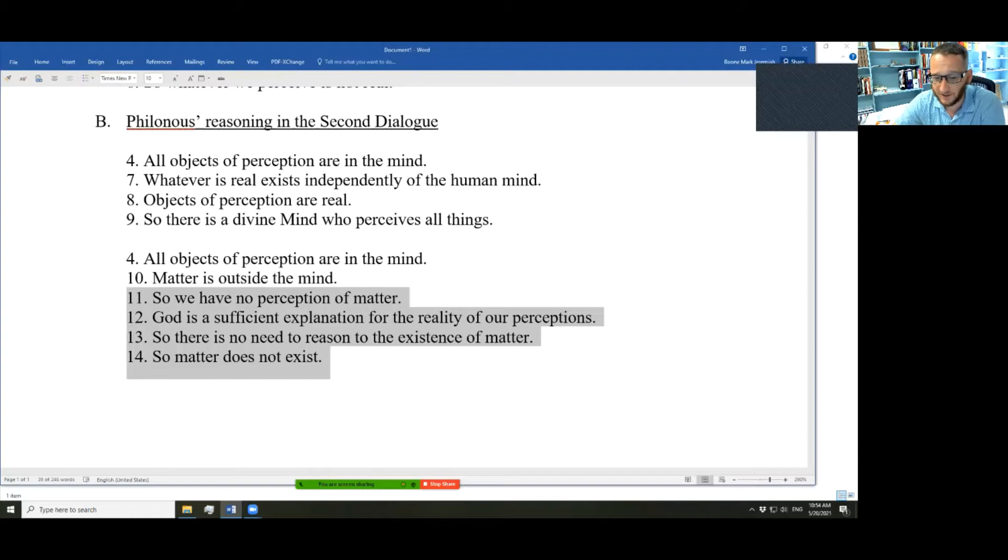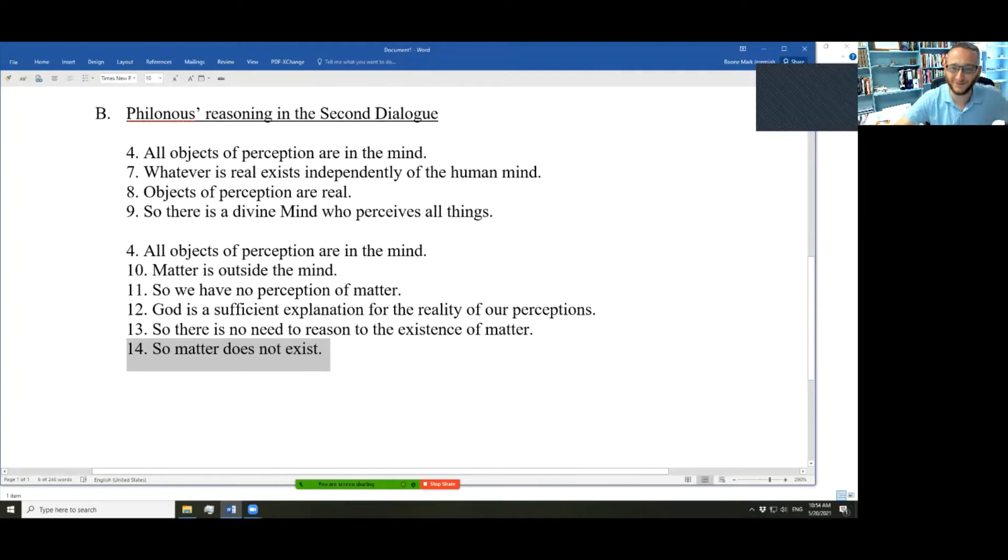God is a sufficient explanation for the reality of our perception. So, there's no need to reason to the existence of matter. We have no perception of matter, no argument that matter exists, like we have an argument that God exists. There's no need for matter to explain anything. Nothing that needs to be explained can be explained by saying something called matter exists. What needs to be explained is explained by the existence of God. There's no need to reason to the existence of matter. And we certainly don't perceive it. So, Occam's razor just cuts it off. There is no matter. That is the conclusion of Philonous in the second dialogue.